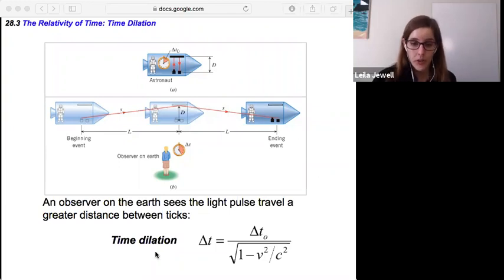And so the time that the Earth observer would measure is known as just delta t, no subscript. And it's equal to that the astronaut would measure, delta t naught, divided by the square root of one minus the speed that the astronaut is going squared, divided by the speed of light squared.